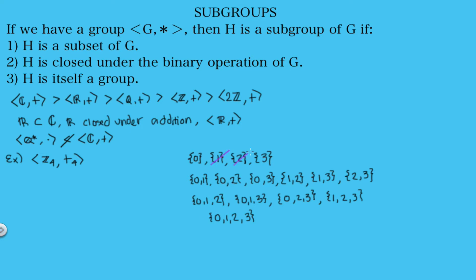We also need closure under addition modulo four. Notice that if a set contains 1, it would have to contain every element to be a subgroup — because 1+1=2, and if 2 is not in the set it's not closed. So any set containing 1 but not all elements can't be a subgroup. Similarly, the set {0,1,2} fails because 1+2=3 and 3 is not in the set, so it's not closed either.